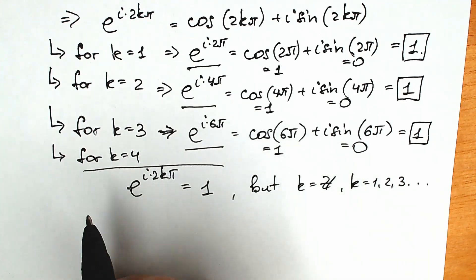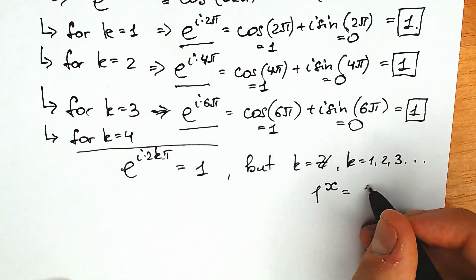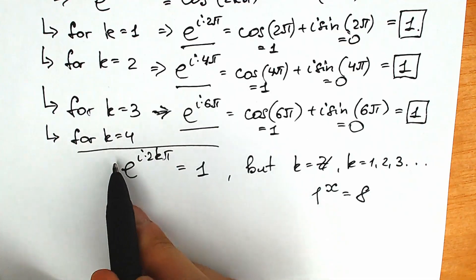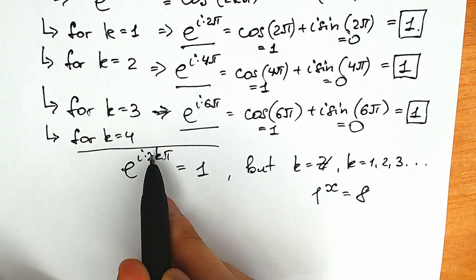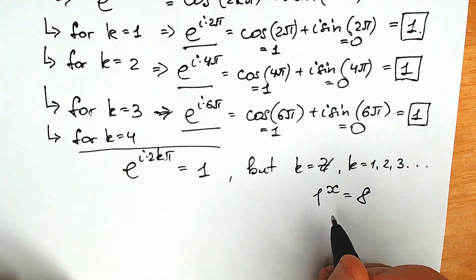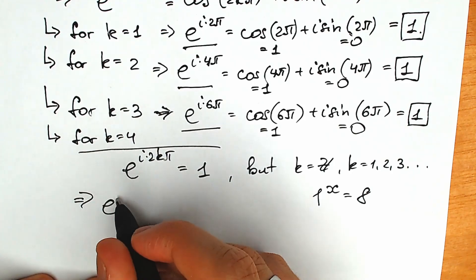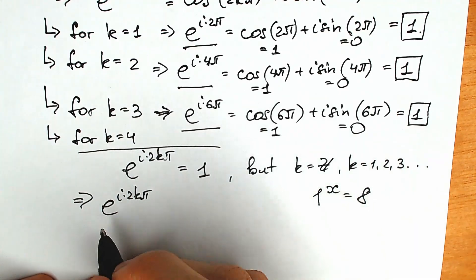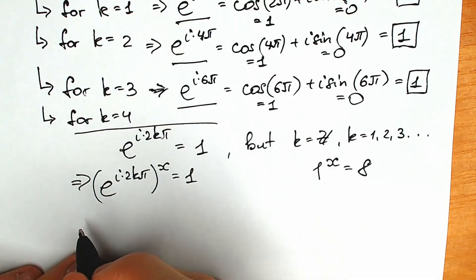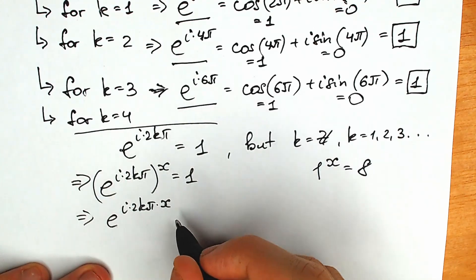Now let's go back to our original question: 1^x = 8. Since e^(i·2kπ) = 1, we can substitute that in for the base 1. So we have e to the power i times 2kπ, raised to the power x, equal to 8. Multiplying the powers gives us e to the power i times 2kπ times x equal to 8.